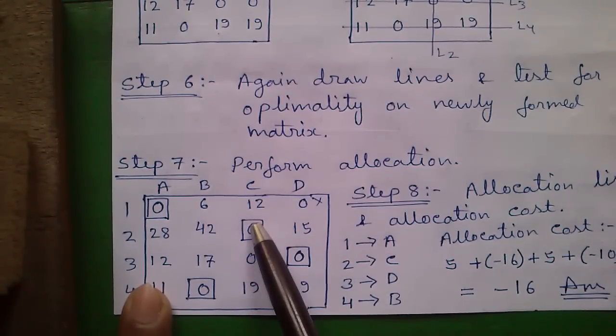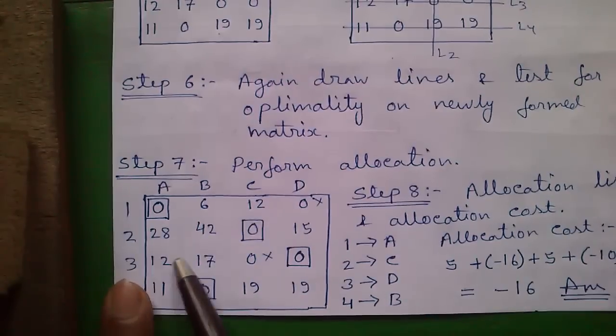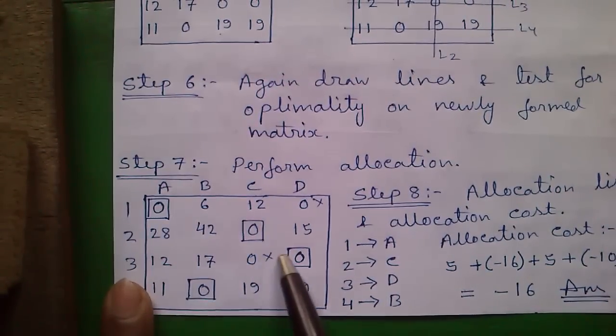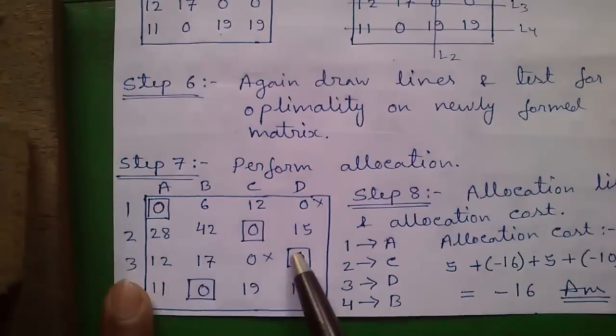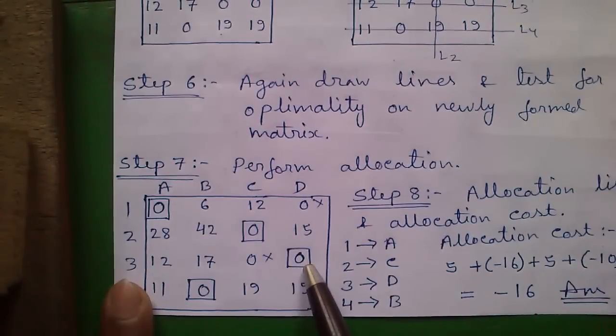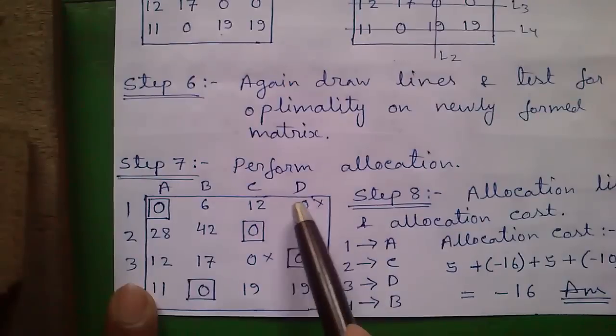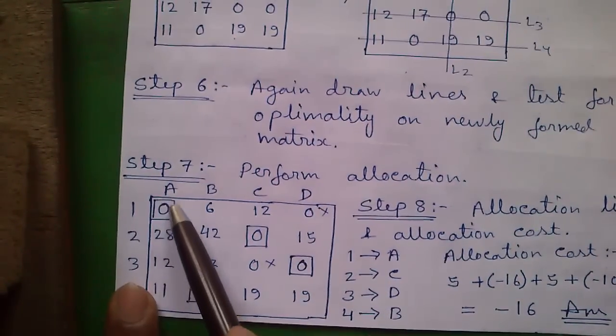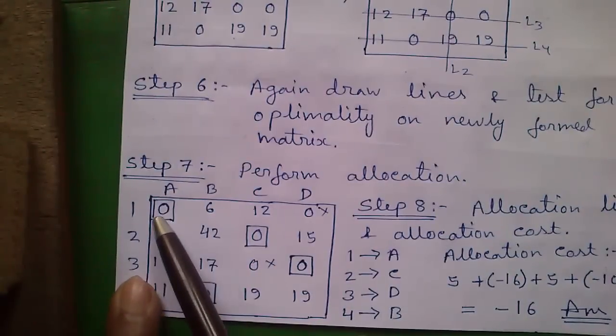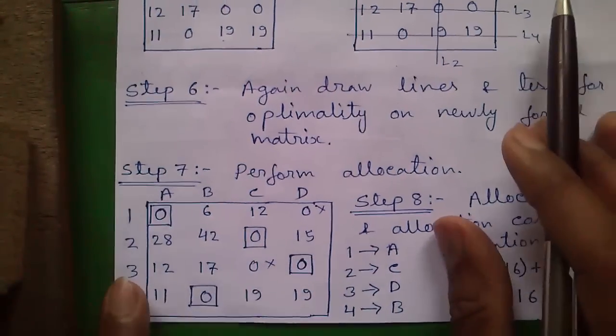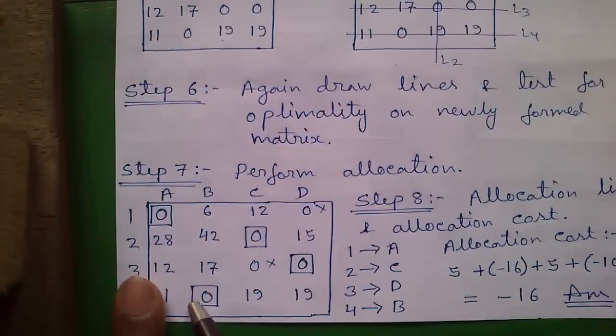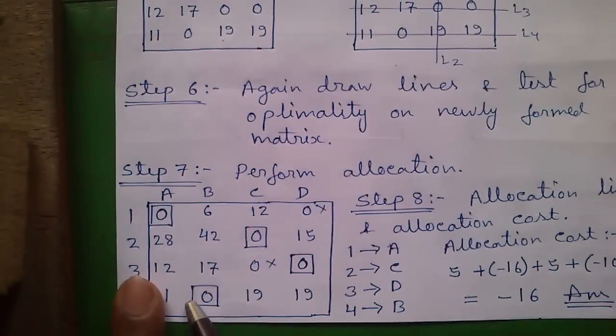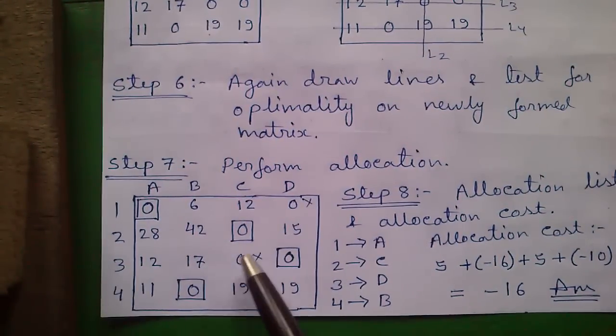Next, again we will look for a single zero. After cutting this zero in row 3, we have exactly one zero. So our second allocation will be done here. Again after crossing this zero, we have exactly one zero in row 1, this is our third allocation. And ultimately we are left with this zero, this is our fourth allocation. All the allocations are complete.